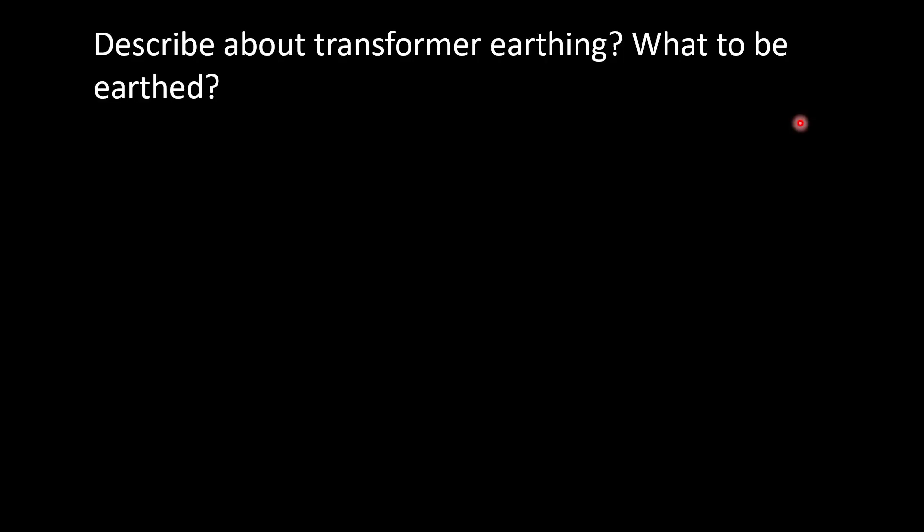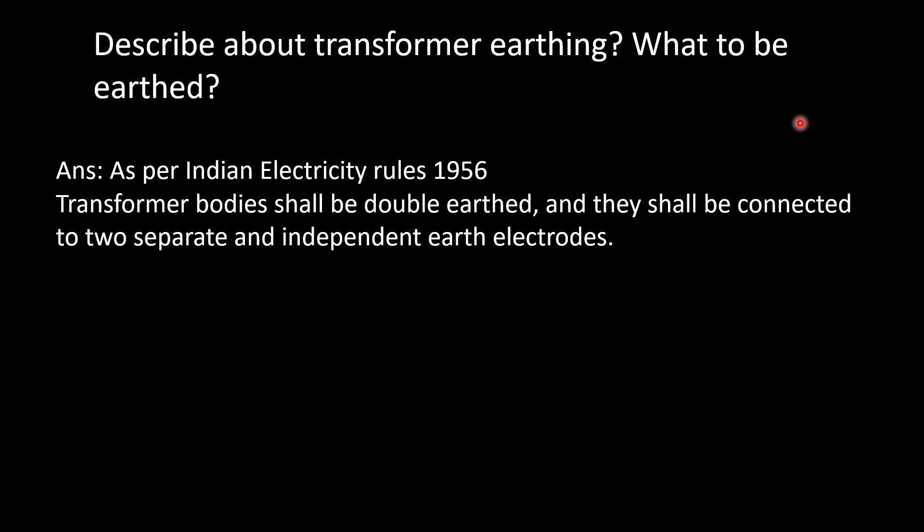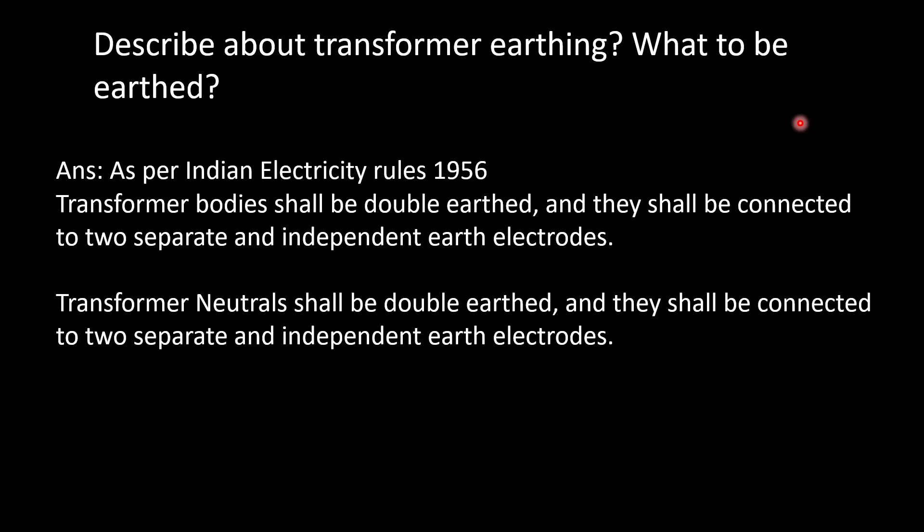Describe transformer earthing and what needs to be earthed. As per Indian Electricity Rules 1956, transformer bodies shall be double earthed and connected to two separate and independent earth electrodes. Transformer neutrals shall also be double earthed and connected to two separate and independent earth electrodes. So for a single transformer, there are four earth pits — two for the body and two for the neutral.